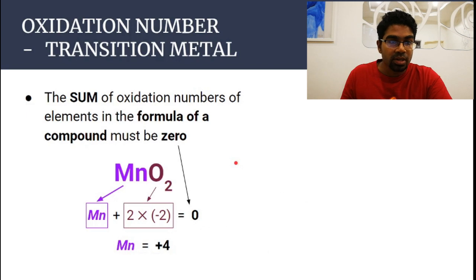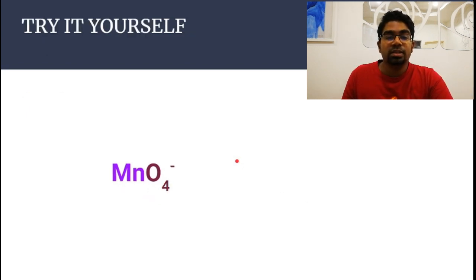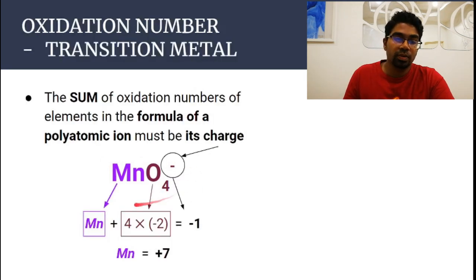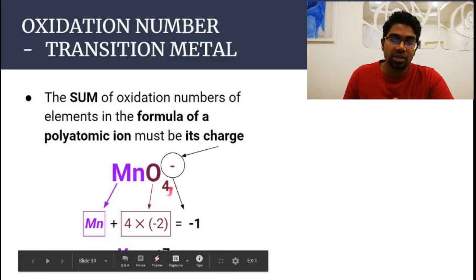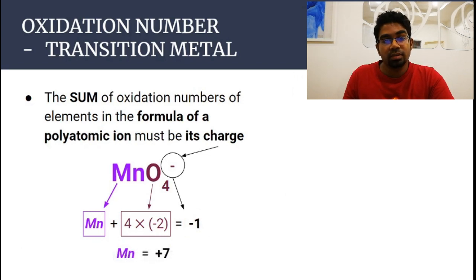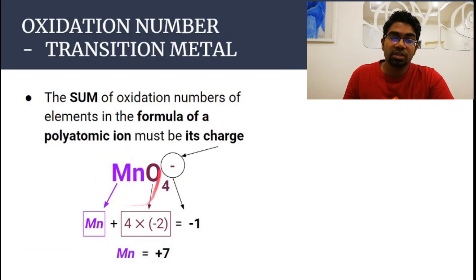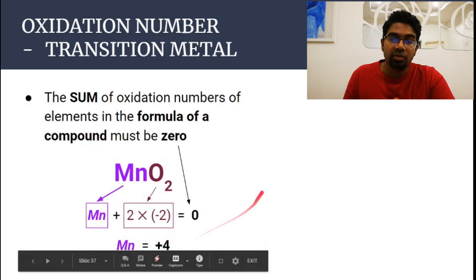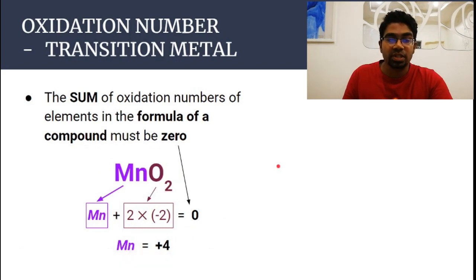Now find the oxidation number of manganese in the permanganate ion (MnO₄⁻). As a polyatomic ion, the sum of oxidation numbers must equal the charge. So: the oxidation number of manganese plus four times minus two equals minus one. Working this out, the oxidation number of manganese is plus seven. Compared to MnO₂ where it was plus four, manganese can assume several different oxidation states.